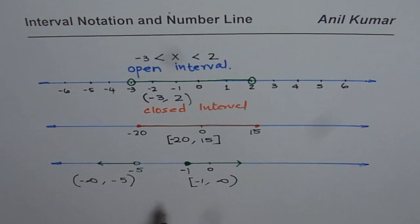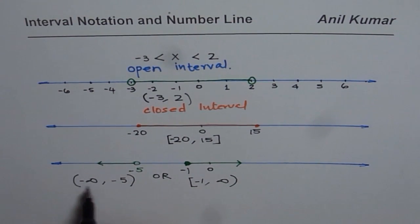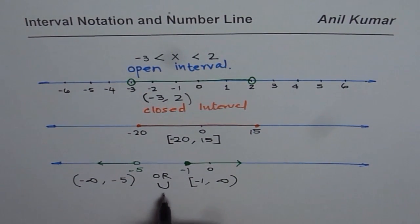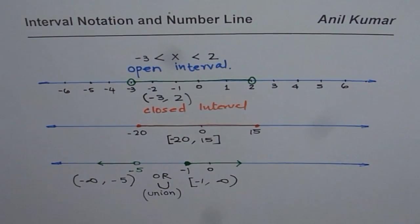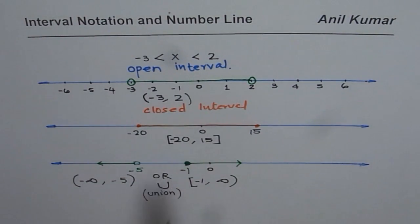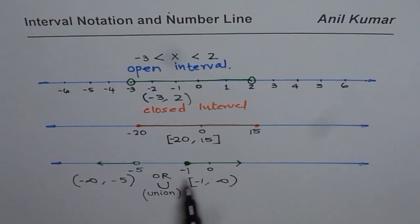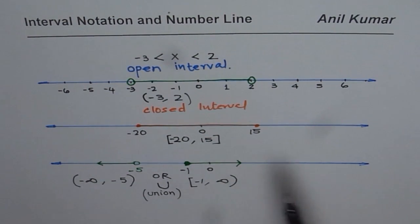Infinity is not a defined real number and you can never reach it, so it cannot be included. In between the two intervals we use the relation 'or'. Sometimes in set notation we also use the union symbol. So this stands for union. The interval notation can be used to represent 'and' conditions, as we see in the first two cases with open or closed intervals. It can also be used for 'or' conditions, as seen in the last example with open, closed, or a combination of these.